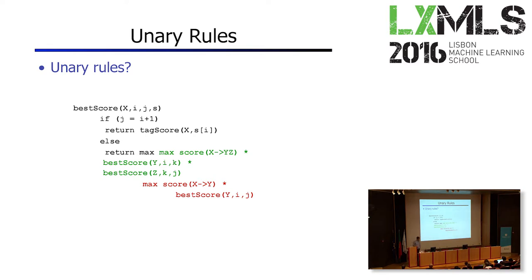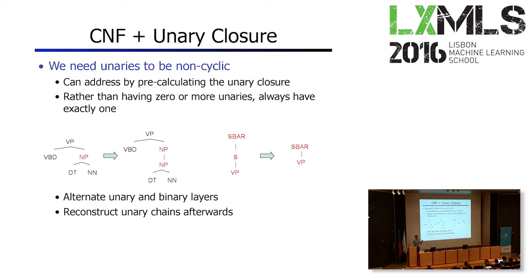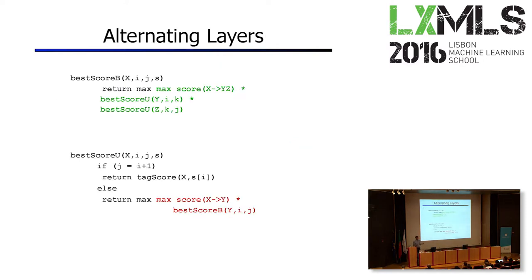Continuing, we said we'll have unary rules as well, so you can add those when you max over the binary rules — you can also have a separate max over unary rewrites and interleave them. A technical detail: you can have unary chains, so multiple unaries on top of each other, and you need to deal with that. You can create a so-called unary closure to handle this without multiple loops.